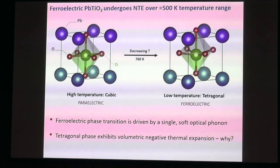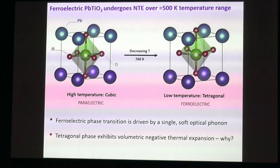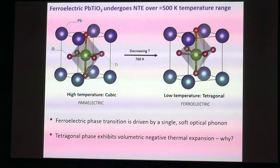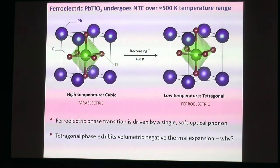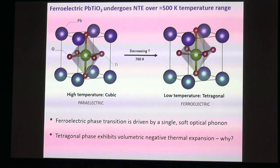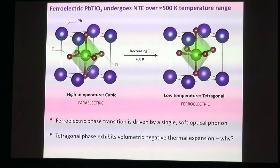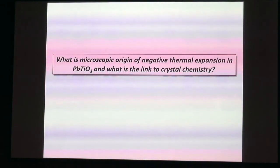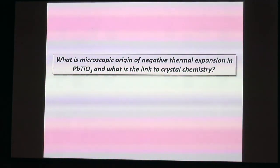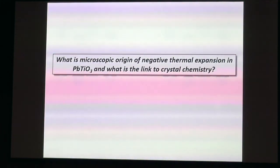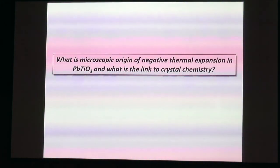Negative thermal expansion among perovskites is even more rare. I believe that lead titanate is the only known perovskite to undergo volumetric negative thermal expansion over any appreciable temperature range. So the first question we wanted to ask was: why does this happen, what's the microscopic origin of NTE in this material, and can we connect it to bonding and crystal chemistry?